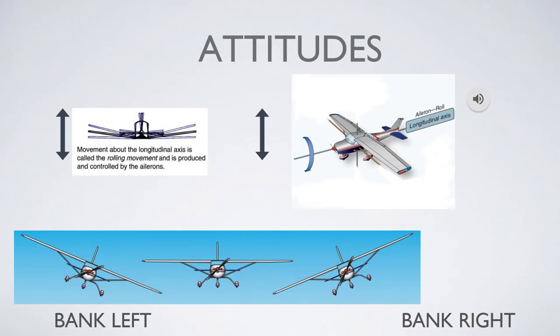Let's talk about roll. Roll is the movement about the aircraft's longitudinal axis, and bank describes that roll relative to the cruise attitude. If you're in cruise and you roll to the left, you'll be in a left bank. If you're in cruise and you roll to the right, you're in a right bank. So bank describes the attitude that the roll is producing.